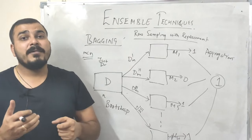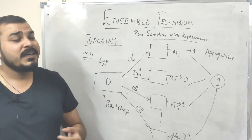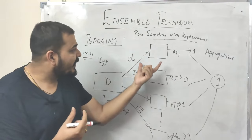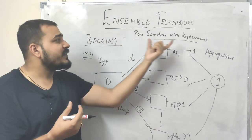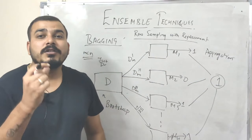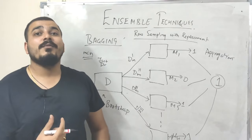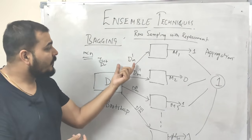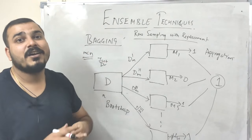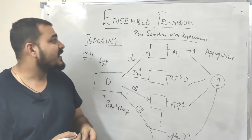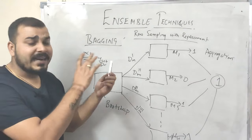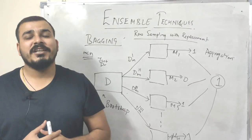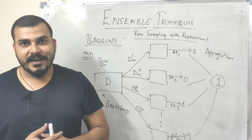In my next video, I'll be discussing about random forest, where the base model will be replaced with decision trees. We'll also see that apart from row sampling with replacement, we will also be using feature sampling with replacement, also called as column sampling — selecting different features for different models. I hope you liked this video. Please subscribe the channel if you haven't already. I'll see you all in the next video. Have a great day. Thank you.